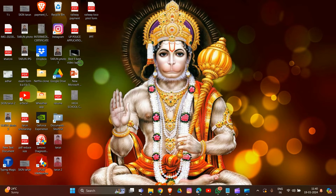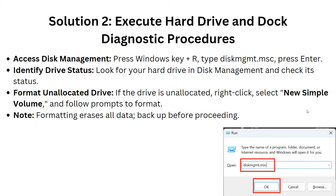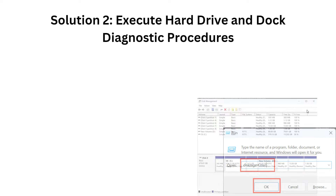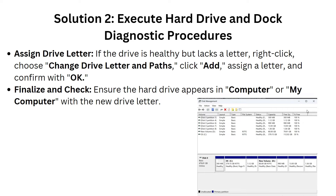Remember to back up all data before proceeding. Now we will assign a drive letter. If the drive is healthy but lacks a letter, right-click, choose Change Drive Letter and Paths, click Add, assign a letter, and confirm with OK. Then ensure the hard drive appears in Computer or My Computer with the new drive letter.